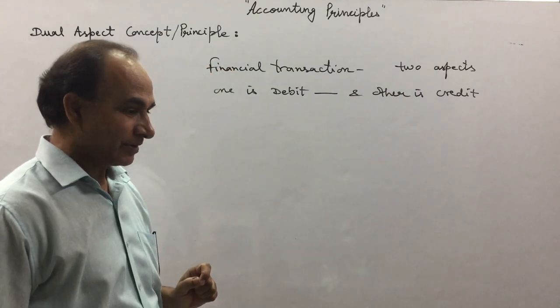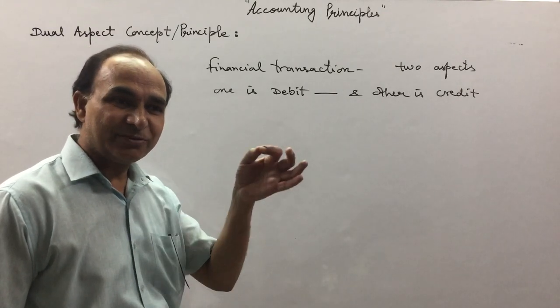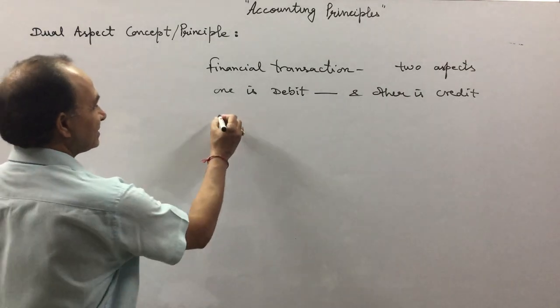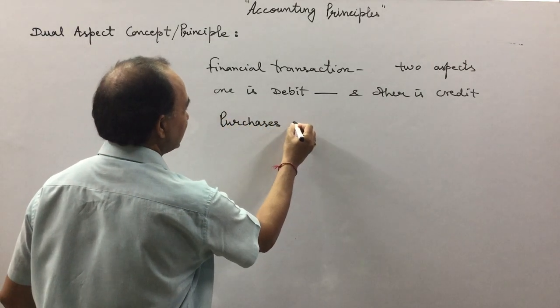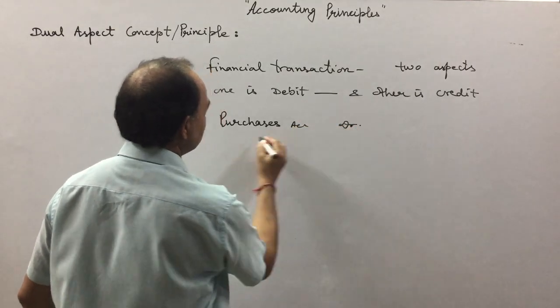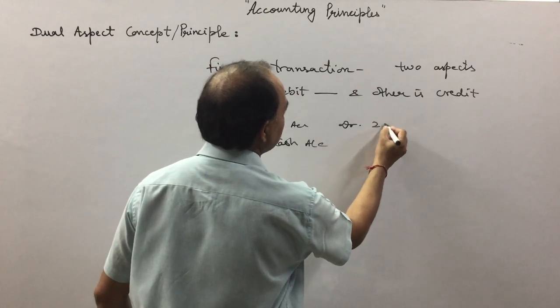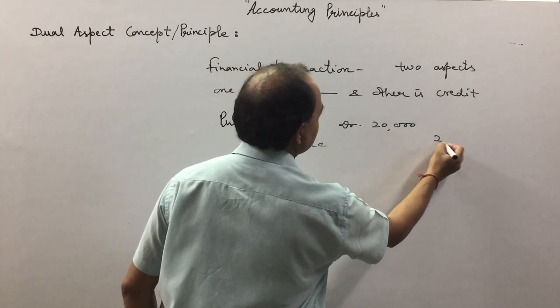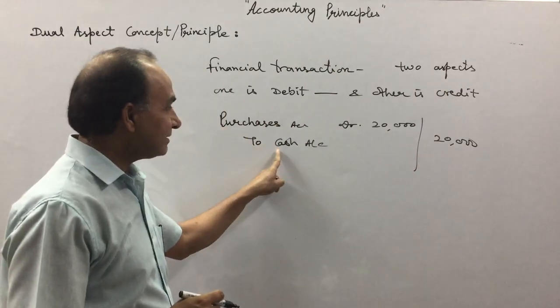For example, if we purchase goods for cash, we pass the general entry. Purchased goods for cash - purchases account debit to cash account. Suppose the amount is 20,000. One account is debited, the other is...